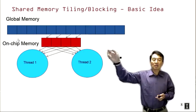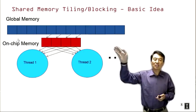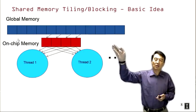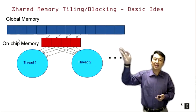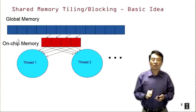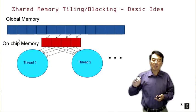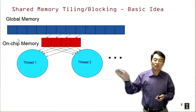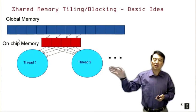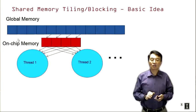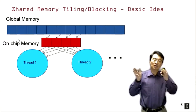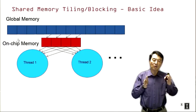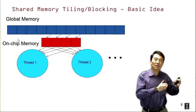When we finish the first tile, the threads load the second tile into on-chip memory, and all threads consume their operands from on-chip memory again. This is how we go from one tile to the next tile and so on.